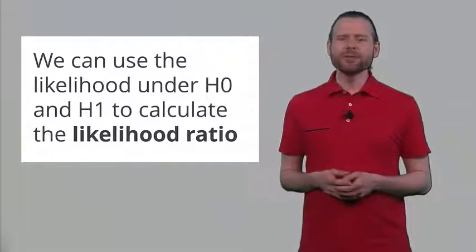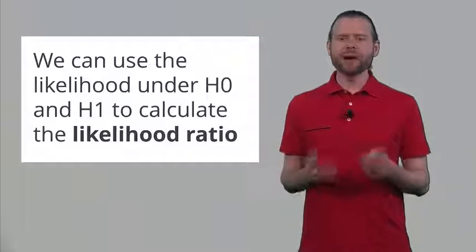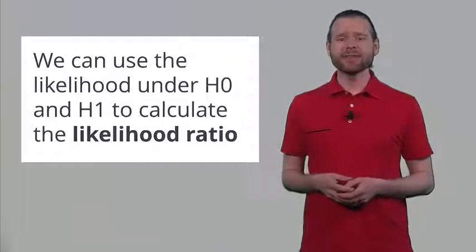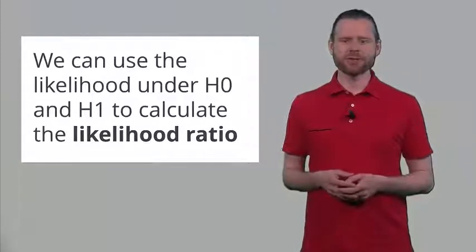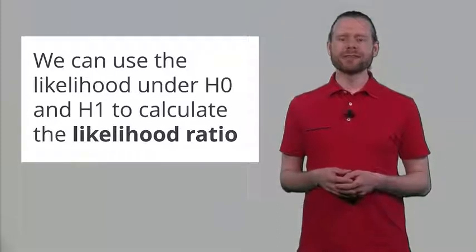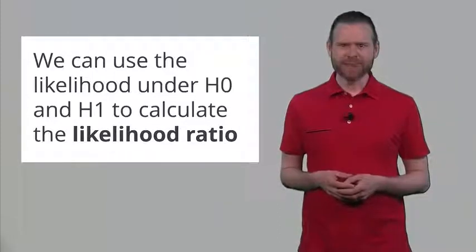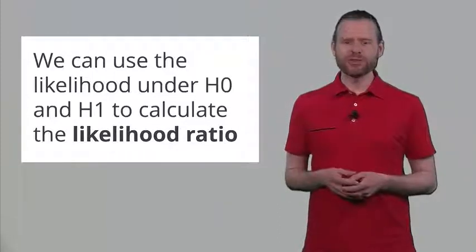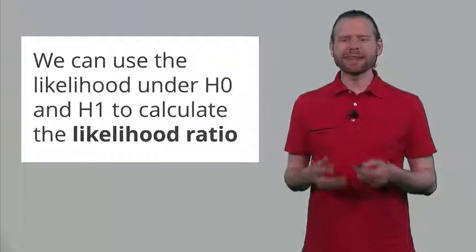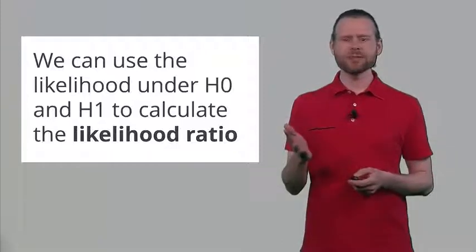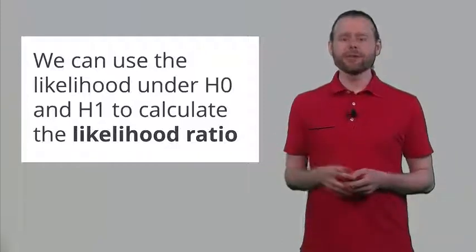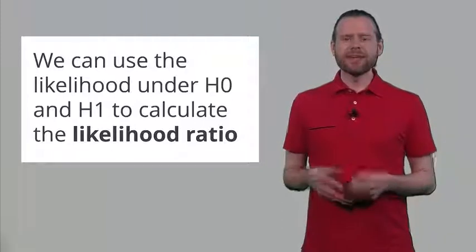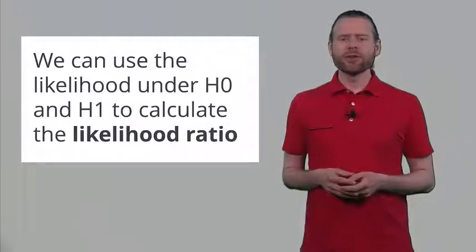Now we can use the likelihood under the null hypothesis and the likelihood under the alternative hypothesis to calculate something known as the likelihood ratio. In the case of the likelihood ratio, we are taking the relative evidence for the null hypothesis and the alternative hypothesis, and we can calculate the odds of one over the other.